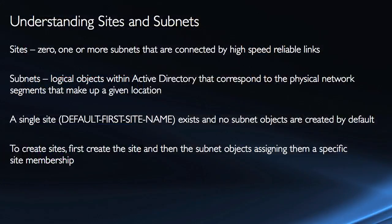What we need to do is determine which sites we're actually going to create, then create the site within Active Directory and name it appropriately — usually for the given location. Then we'll create subnet objects, and those subnet objects will tie in with the subnetworks used in that given location. For example, the 192.168.1.0/24 network is used for the New York site. That's the way we go about creating sites, subnet objects, and linking them to a specific site.